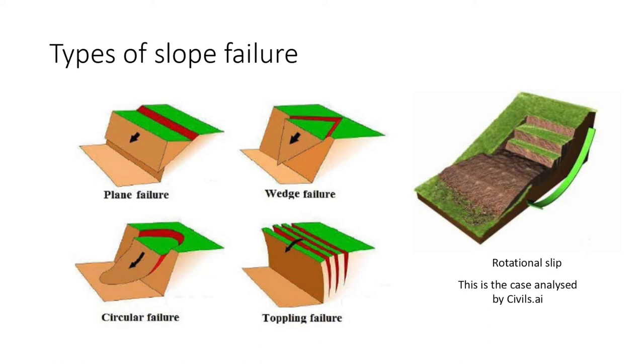Rotational slips are the most common form of slope failure and follow a circular arc through the soil. Translational slips are also common, which are typically found when the topsoil layer is underlain by a soil of very different strength. Further details on rotational slips will be covered in a later video.